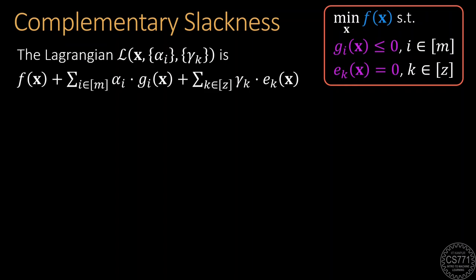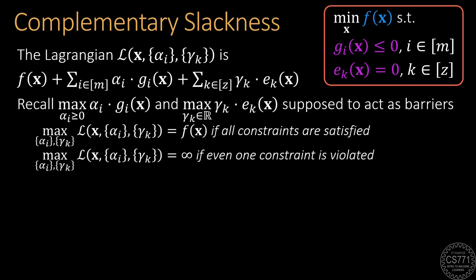We know how to create the Lagrangian for this problem by introducing dual variables, say alpha_i and gamma_k. However, recall that the purpose of creating the Lagrangian was to introduce exact barrier functions.